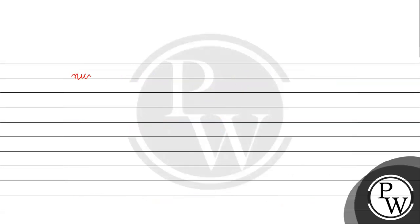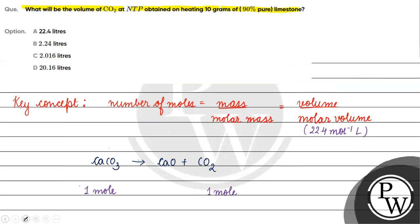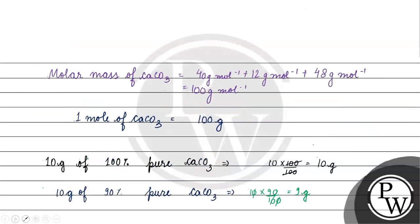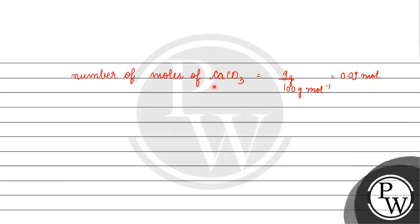Now we calculate the number of moles of calcium carbonate: moles = 9 grams ÷ 100 g/mol = 0.09 moles. From the stoichiometry, 0.09 moles of calcium carbonate gives 0.09 moles of carbon dioxide.